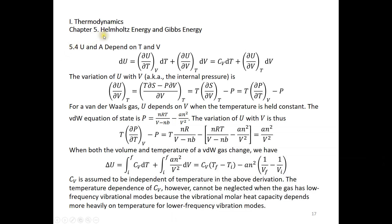Chapter 5: Helmholtz energy and Gibbs energy, Section 5.4: U and A depend on T and V. U can be expressed as a function of temperature and volume, so dU can be written as (δU/δT)dT plus (δU/δV)dV. The term δU/δT at constant volume is simply C_V, the isochoric heat capacity.